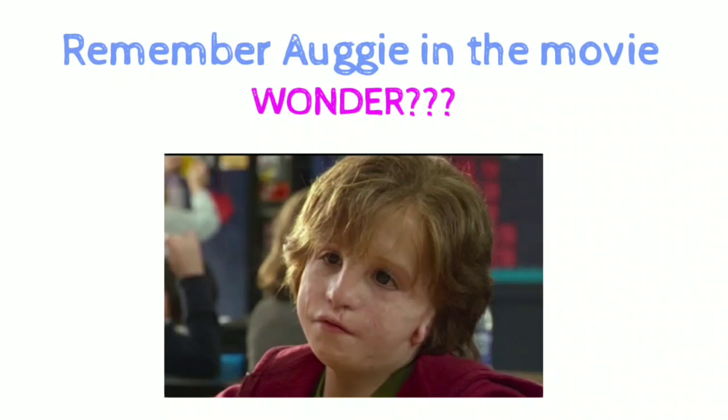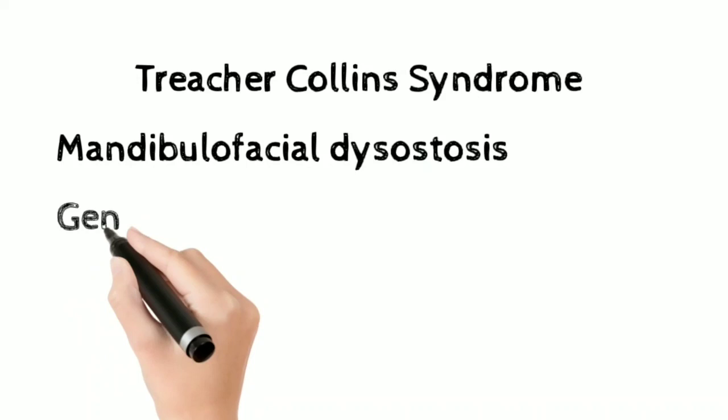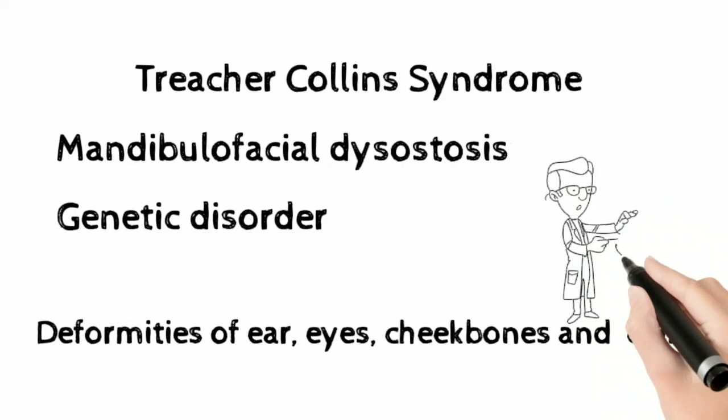Treacher-Collins syndrome is also known as mandibular facial dysostosis. If you could remember the synonym itself, you will be able to recall all the clinical features. This is a rare genetic disorder with deformities of ear, eyes, cheek bones and chin.